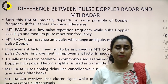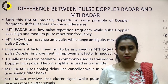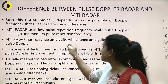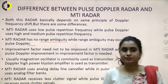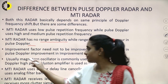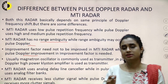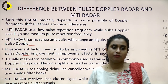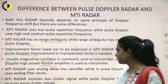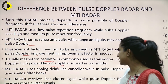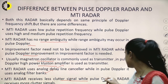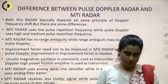What is the difference between pulse Doppler radar and MTI radar? Both basically depend on the same Doppler frequency shift. But the major difference is MTI radar has no range ambiguity, while range ambiguity may occur in pulse Doppler. Improvement factor need not be improved in MTI radar, whereas improvement factor is needed in pulse Doppler. MTI radar uses an analog delay line canceler, while pulse Doppler radar uses analog filter banks. MTI radar receives less clutter signal, while pulse Doppler radar receives more clutter signal.